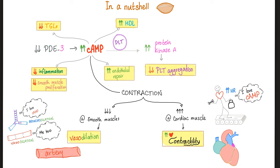Cyclic AMP in a nutshell: it increases good cholesterol, decreases bad triglycerides, decreases inflammation and smooth muscle proliferation, repairs your endothelium, and inhibits platelet aggregation. When it comes to contraction, it depends on the tissue — increased contraction in cardiac muscle, decreased contraction in smooth muscles.